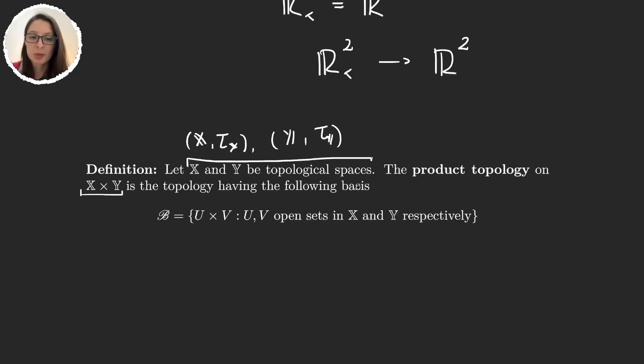The product topology is going to be defined via its basis, so it's going to be the topology generated by this basis. And the basis is quite simple, it's just the product of open sets in x and y. So u times v are open sets in x and y, meaning this is going to be the product u times v of elements u in the x topology and v in the y topology.